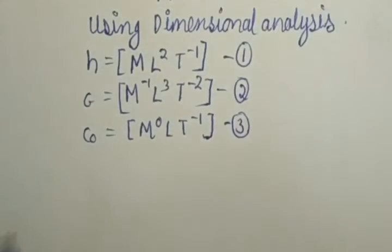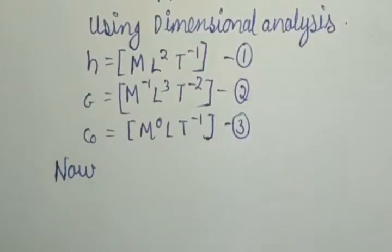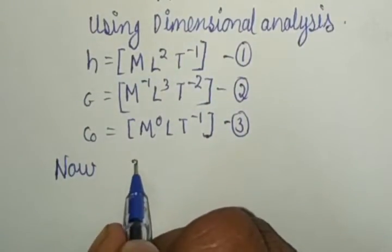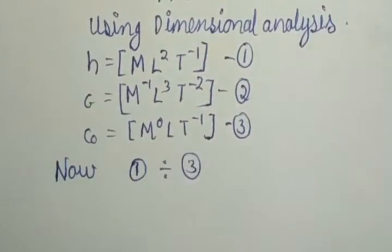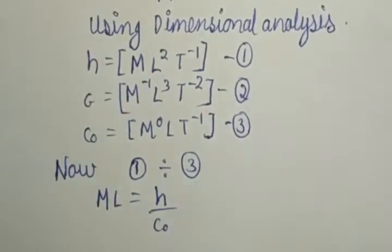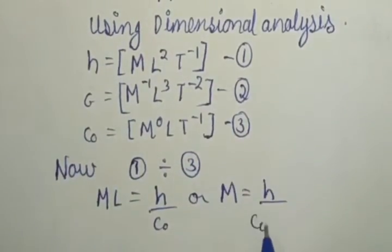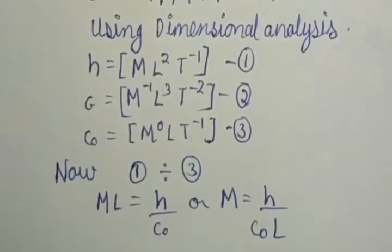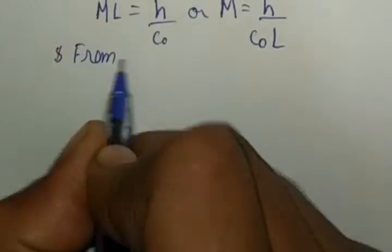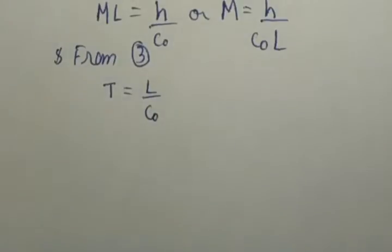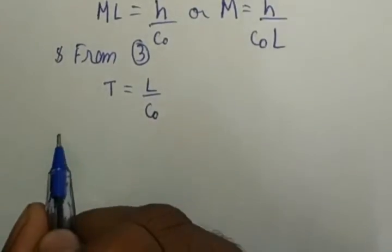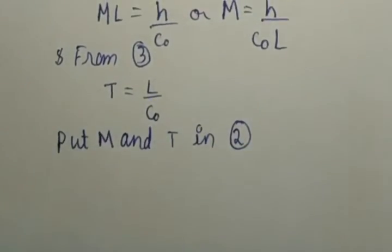In terms of equations, now let's divide equation one by equation three. We'll get the value of ML in terms of h and c₀. Now let's write M in terms of L, h, and c₀. From three we can write time in terms of L and c₀. Now put them in equation two.